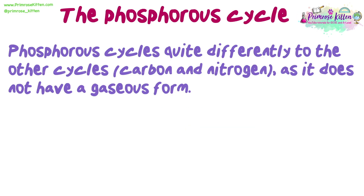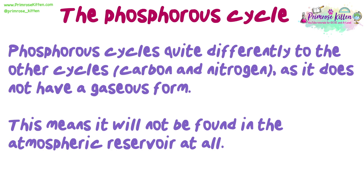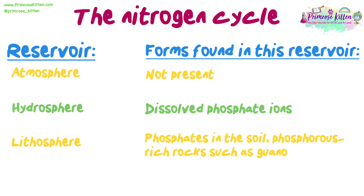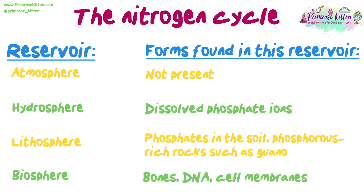Phosphorus cycles quite differently to the other cycles — carbon and nitrogen — as it does not have a gaseous form. This means it will not be found in the atmospheric reservoir at all. However, it is found in the hydrosphere as dissolved phosphate ions, in the lithosphere as phosphates in the soil and phosphorus-rich rocks such as guano, and in the biosphere in bones, DNA, and cell membranes.